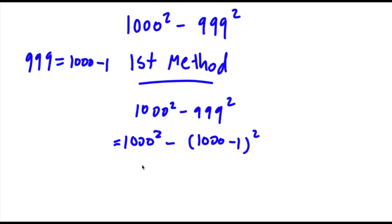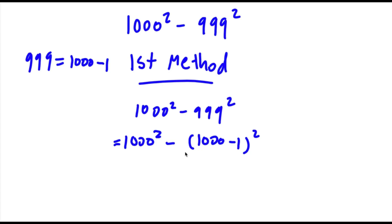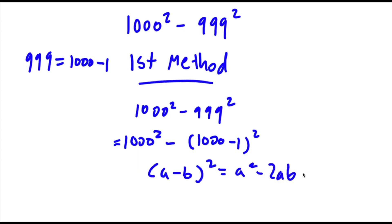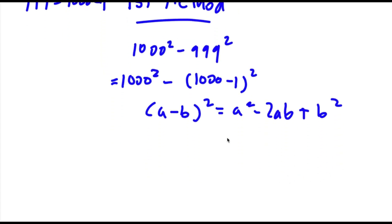Now, if I have something in the form (a minus b) squared, this is equal to a squared minus 2ab plus b squared. So in this case a is equal to 1000 and b is equal to 1.